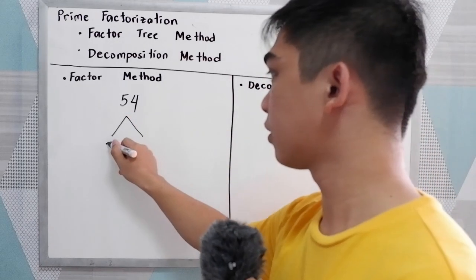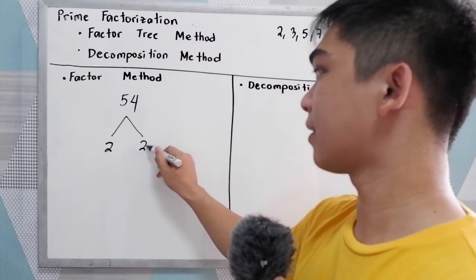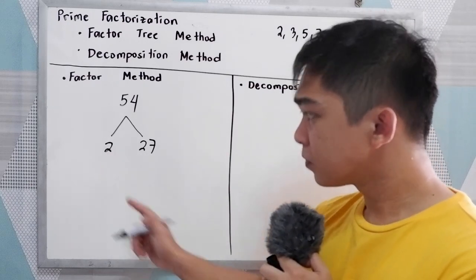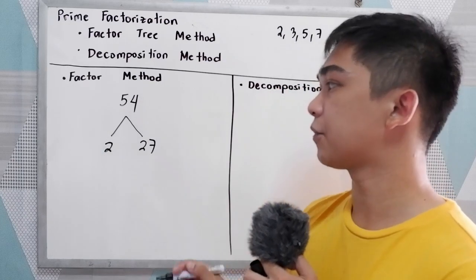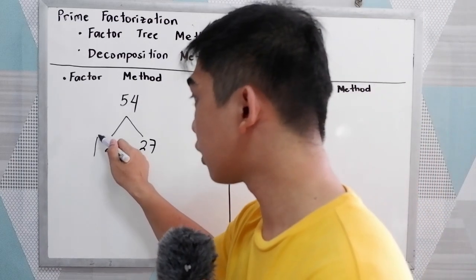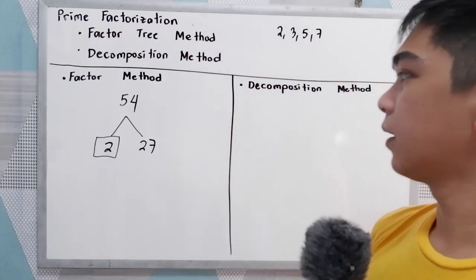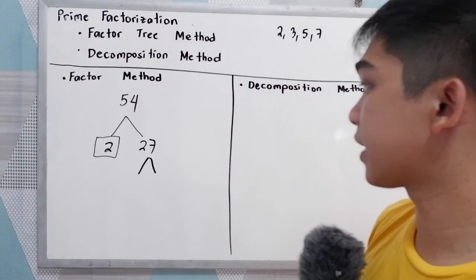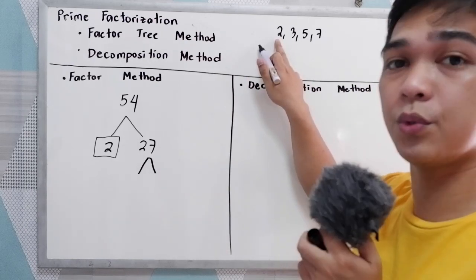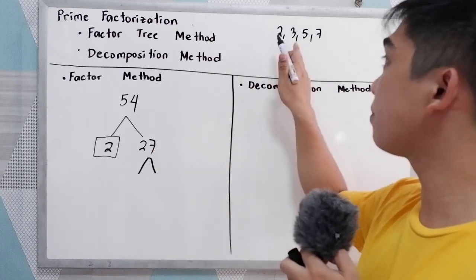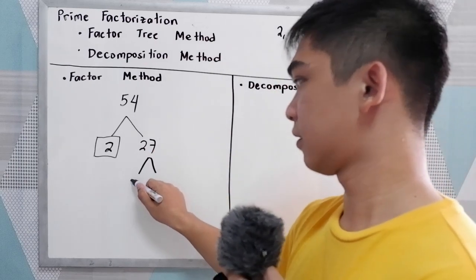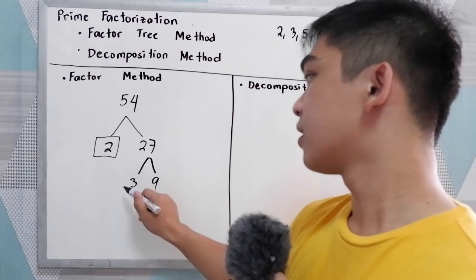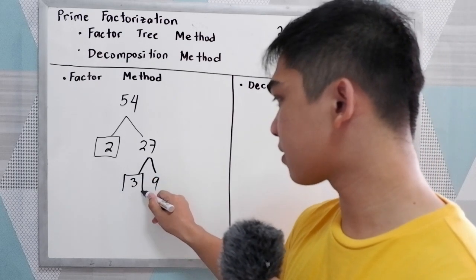54 divided by 2 is 27, so it is divisible by 2. If you want to check if your factors are correct, just multiply: 2 times 27 is 54. Now box the prime number 2. 27 is not a prime number, so let us find the factors of 27. 27 is not divisible by 2. Next is 3: 27 divided by 3 is 9. So our prime number here is 3, so box 3.